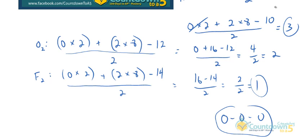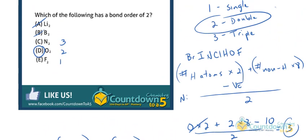So the correct answer would be D, oxygen has a bond order of 2.